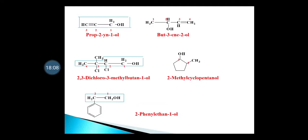If there is a double or triple bond in addition to the OH group, you still give preference to the alcohol — the OH carbon gets the lowest number. For example, with a triple bond at position 2 and OH at position 1, we write prop-2-yn-1-ol. For a chain with a double bond, we write but-3-en-2-ol, starting the numbering from the end that gives the OH carbon the lowest number.